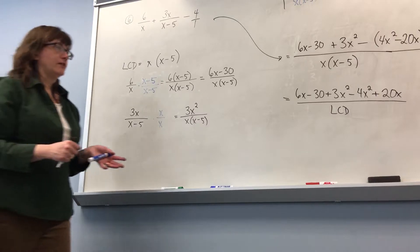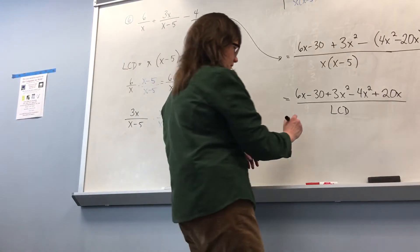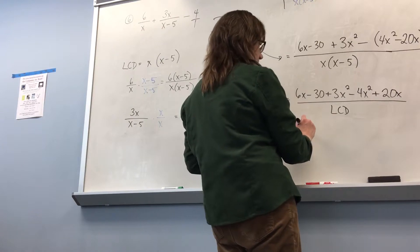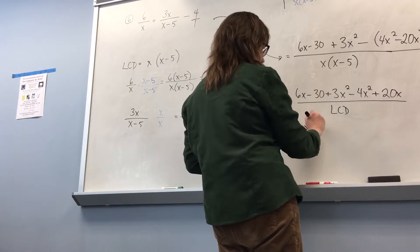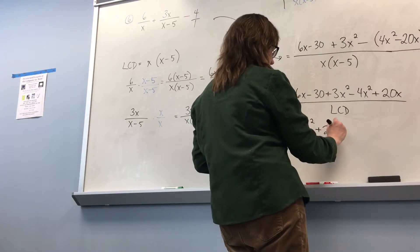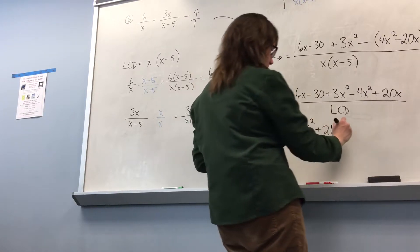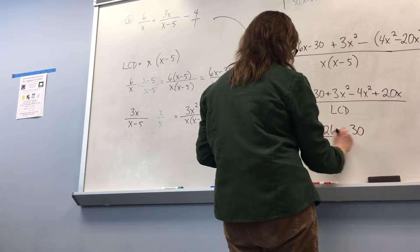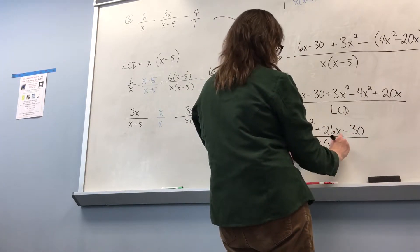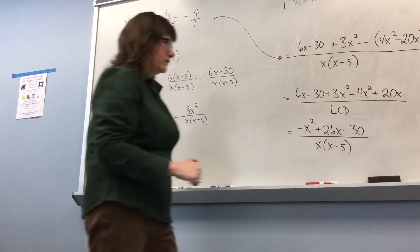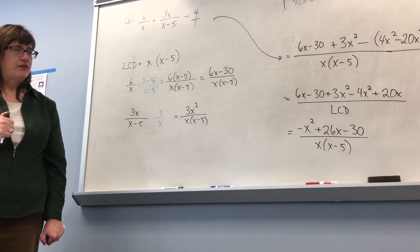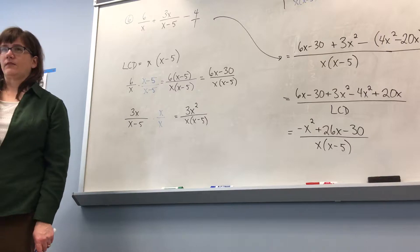When I distribute that minus, I end up with 6x minus 30 plus 3x squared minus 4x squared plus 20x, all over my least common denominator. Now I'm going to combine like terms in descending order: 3x squared minus 4x squared is negative x squared; 6x plus 20x is 26x; and then minus 30. So I have negative x squared plus 26x minus 30 over x times x minus 5.